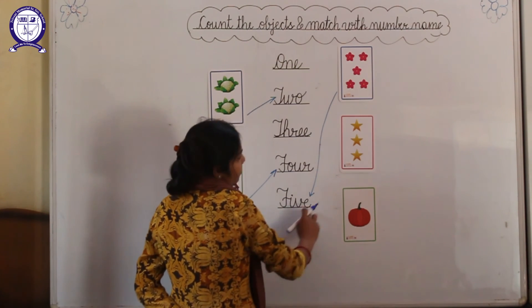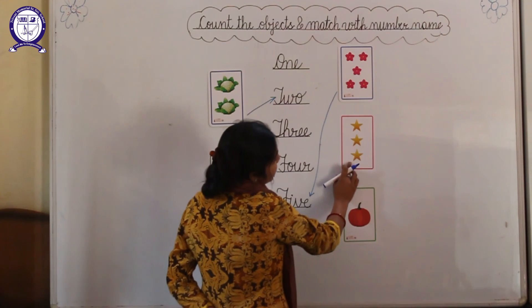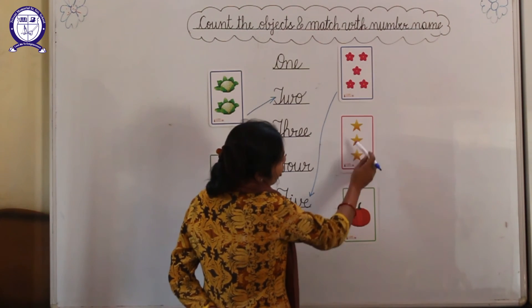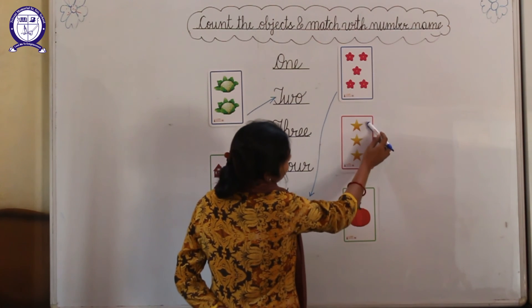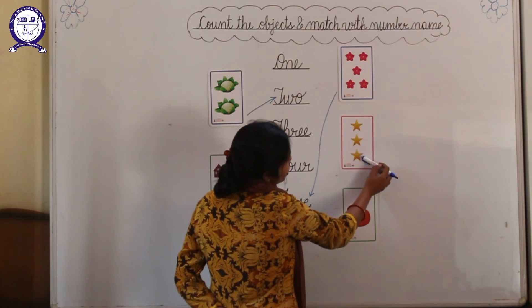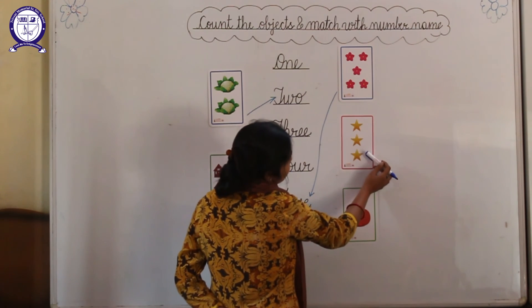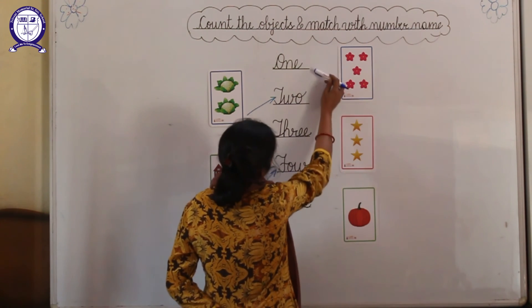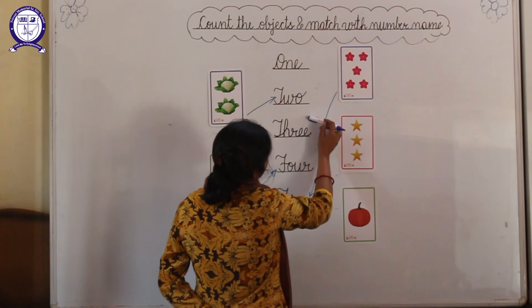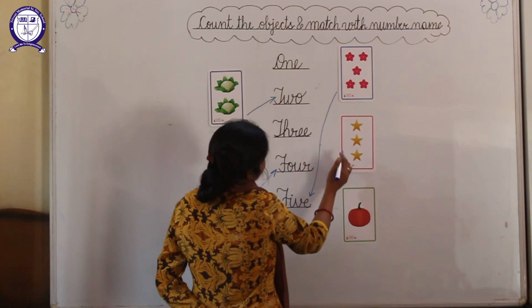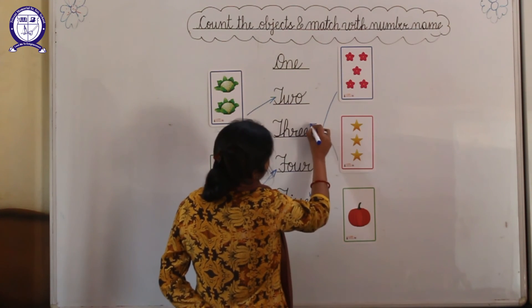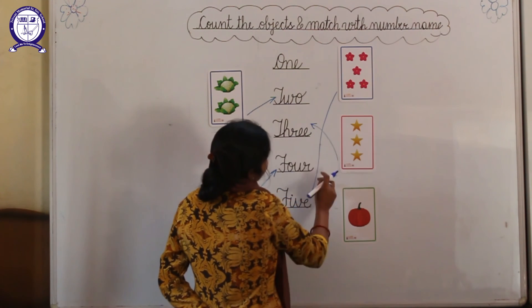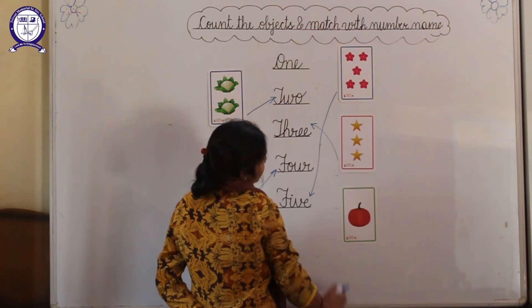And next beta, how many stars are there? 1, 2, 3. And where is the spelling of 3? Here. And match the spelling of 3.